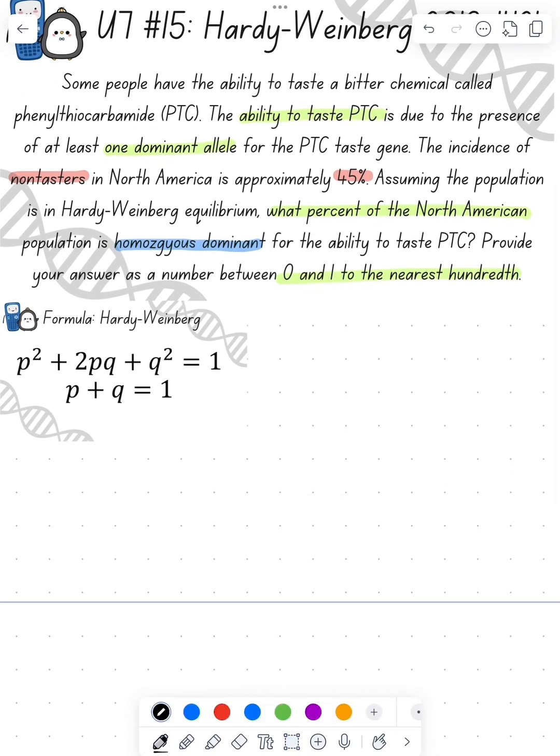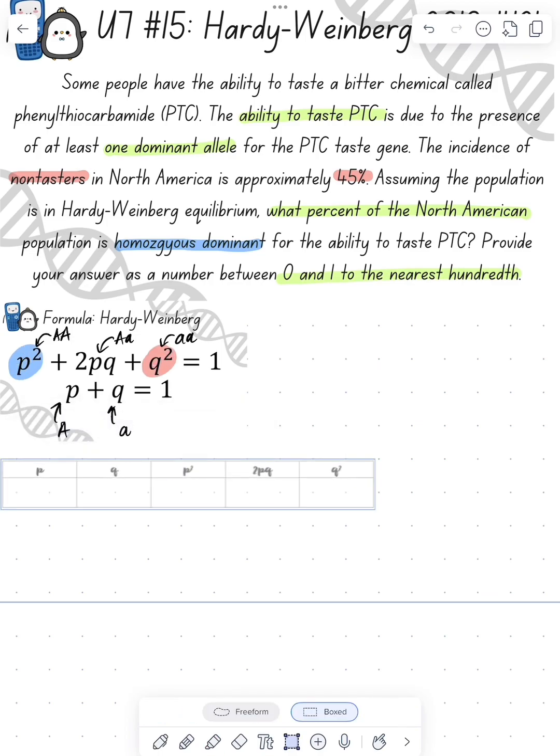So here's our equation. We know from the equation that q² is our homozygous recessive, 2pq is our heterozygous, and p² is our homozygous dominant, because p is dominant and q is recessive. So we're looking for p² and we know q².